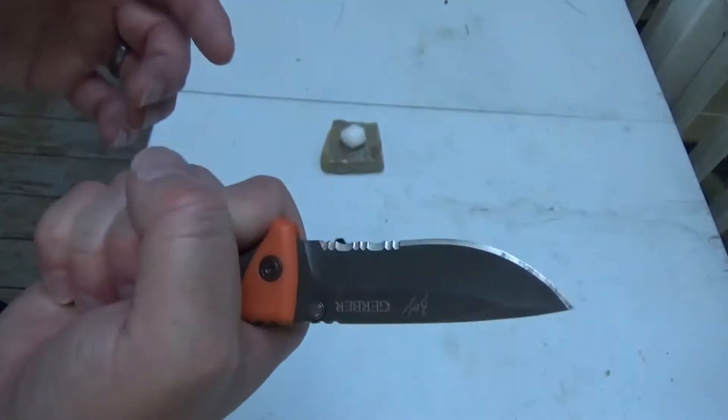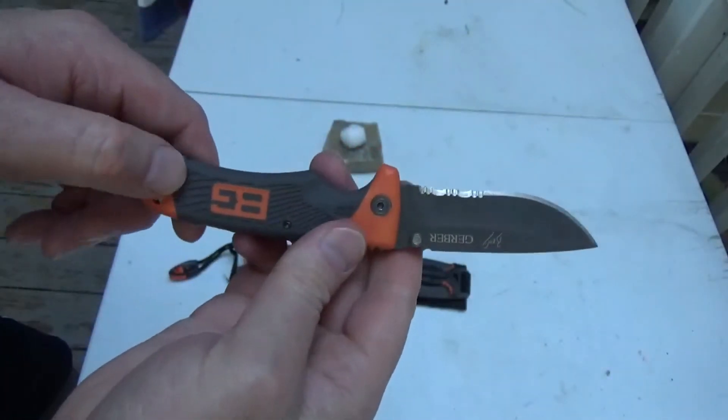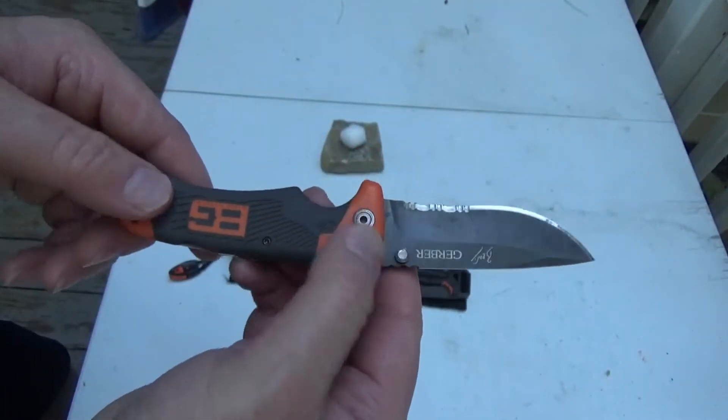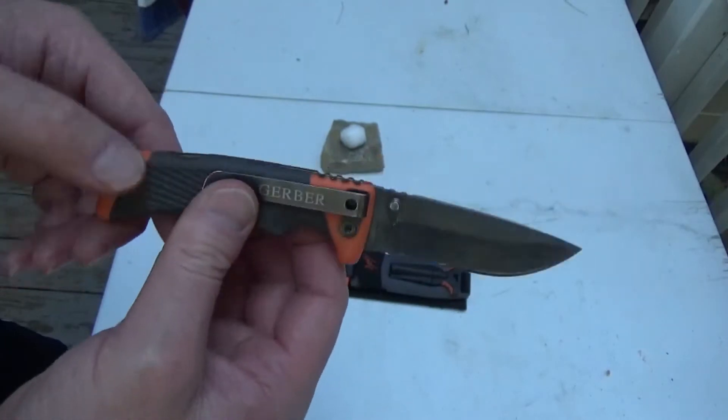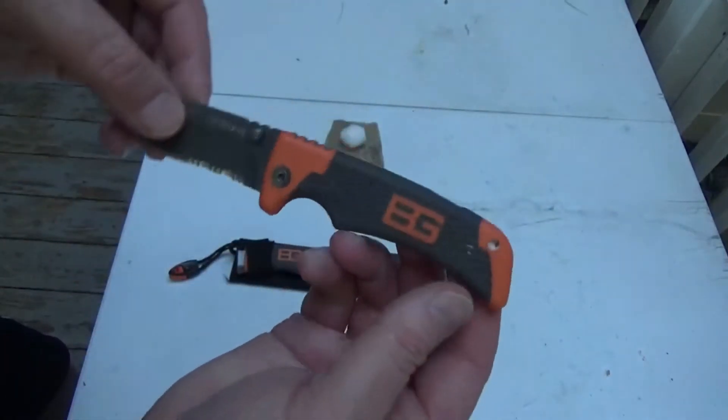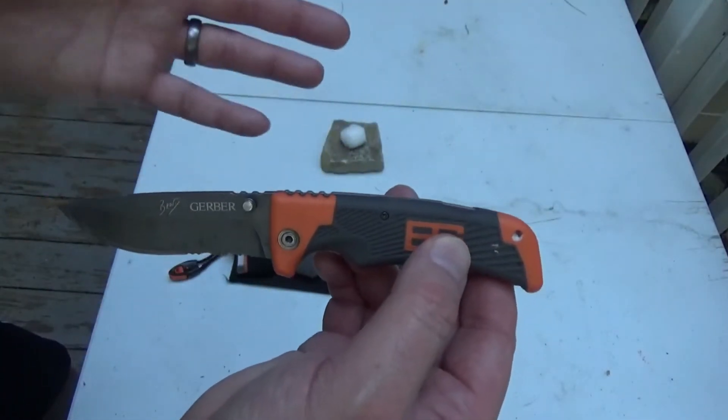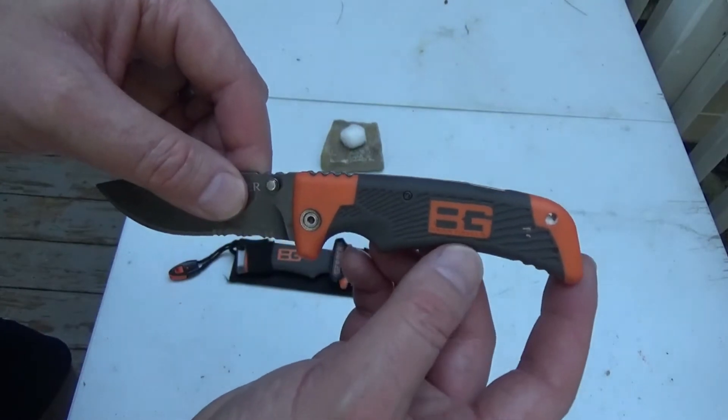I like the fact that it has a nice rubber grip. I like that it's orange, I can see it if I happen to drop it, I'm not going to lose it. Again, I'm not a huge Bear Grylls fan, but this knife I have to be a hundred percent honest is produced very, very well.